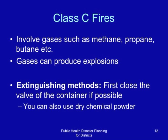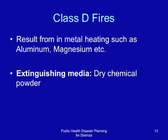Class D fires result from metal heating such as aluminum and magnesium. The main extinguishing media is dry chemical powder. These fires are capable of reaching very high temperatures. Notably, dry chemical powder is useful for all classes of fires.